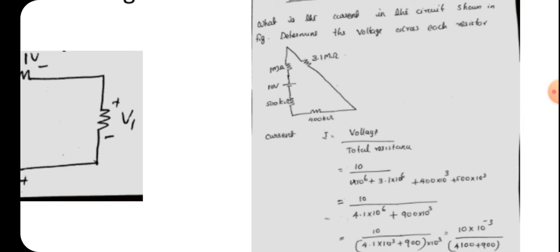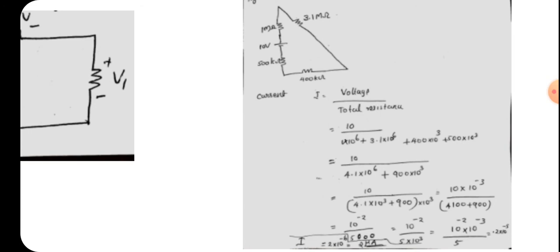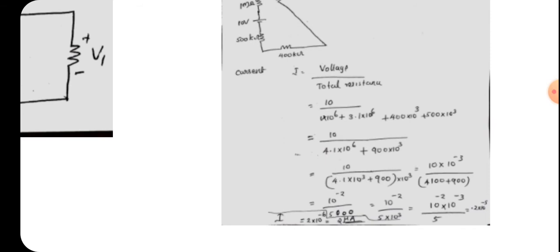Since it is a series circuit, current I equals total voltage divided by total resistance. Voltage is 10 volt. Total resistance is 1 mega-ohm plus 3.1 mega-ohm plus 400 kilo-ohm plus 500 kilo-ohm, which equals 1×10⁶ plus 3.1×10⁶ plus 500×10³ plus 400×10³ ohms. Substituting and solving this simple addition gives current I equal to 2×10⁻⁶ ampere.